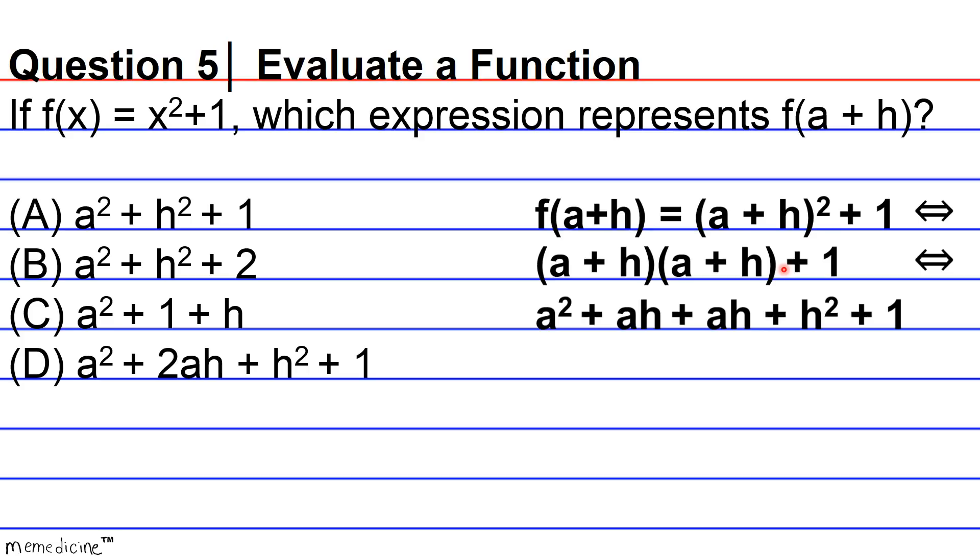And we cannot leave out our one. That wasn't so bad. But now, what we can go ahead and do is actually combine the like terms. I see two like terms here that can be combined to make things a little neater. And when you combine the like terms, you get A squared plus 2AH plus H squared plus 1. This is answer choice D. That wasn't so bad. That's good. Let's go. Thank you.